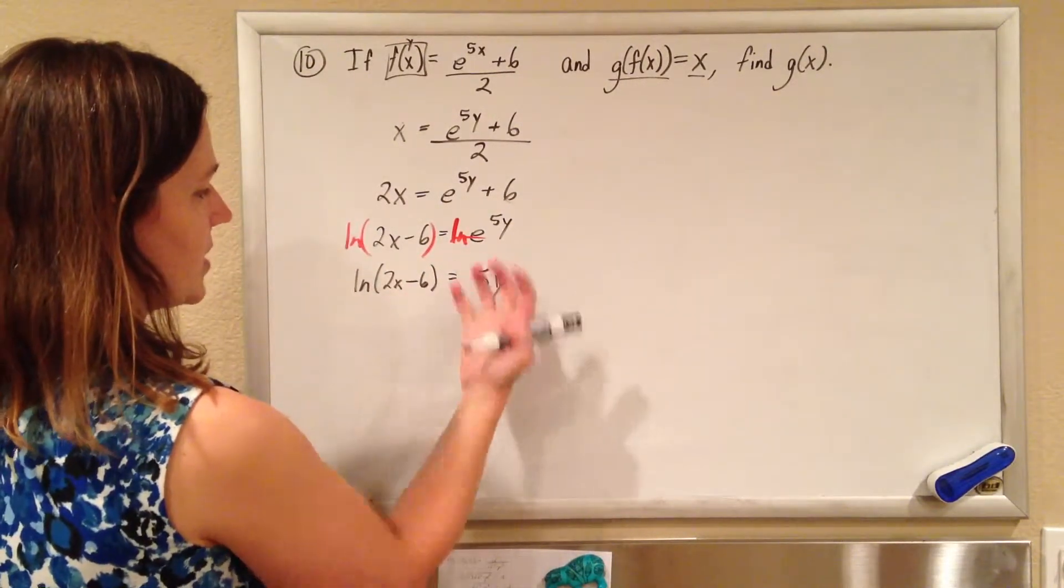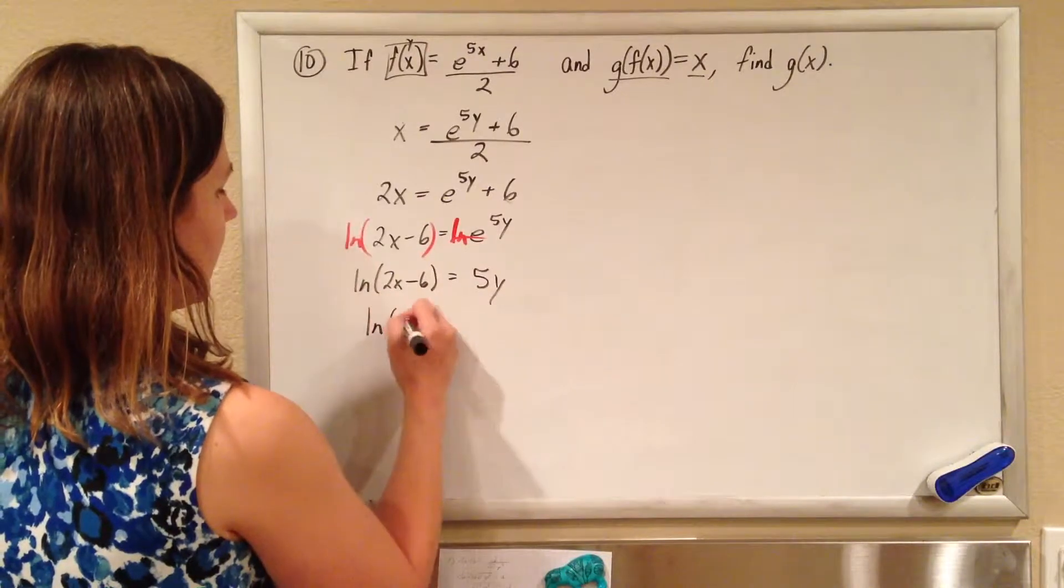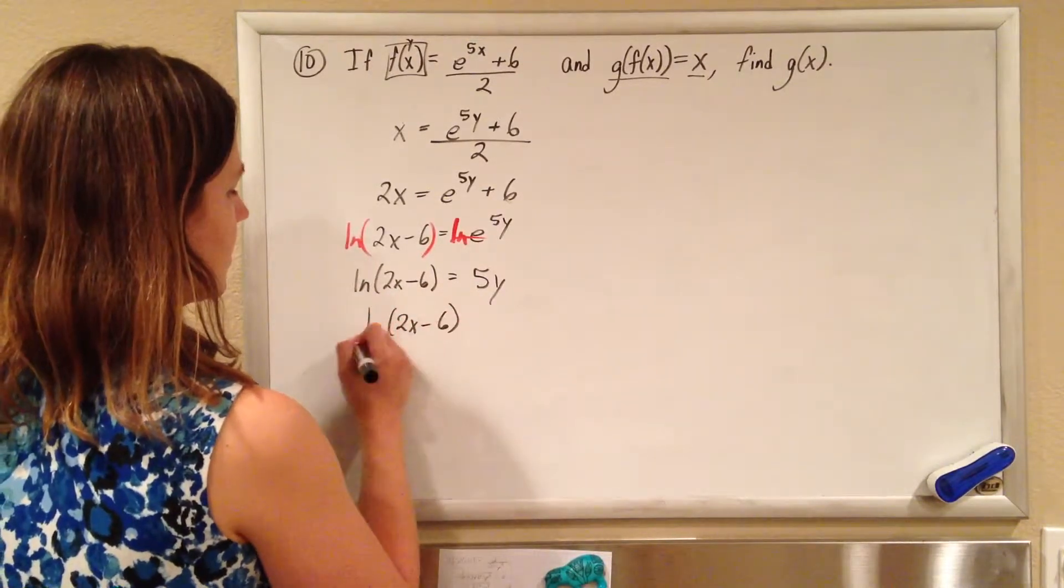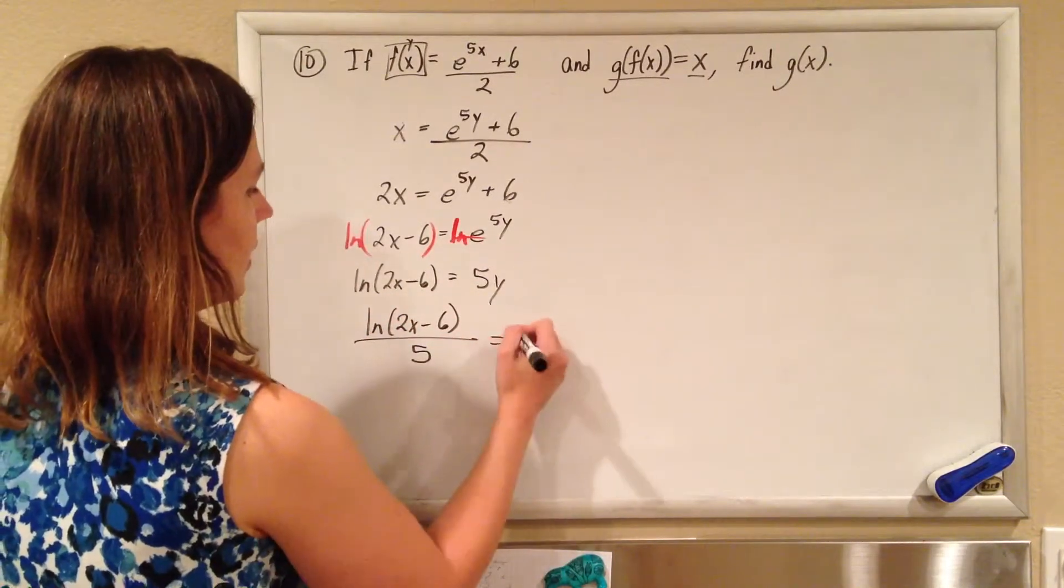One last step to solve for y, just divide by that 5. You have the ln of 2x minus 6, all divided by 5, equaling y.